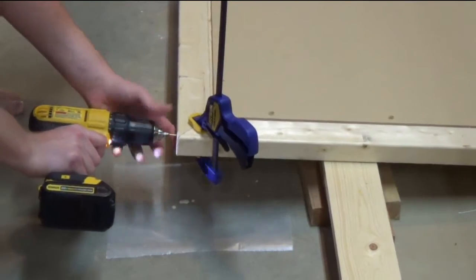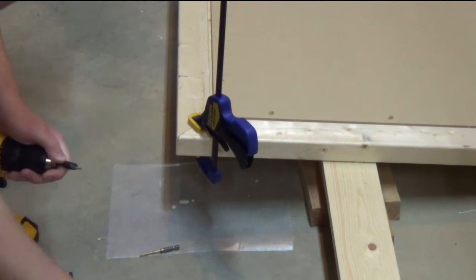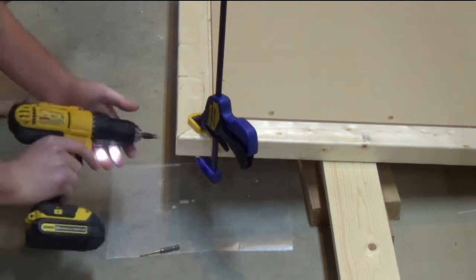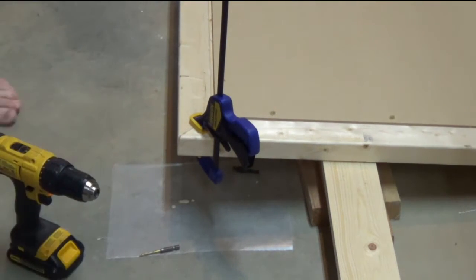Now to securely hold the corners together, I'm going to put one screw in each corner coming from either the top or the bottom. That way we won't be able to see the screw heads.